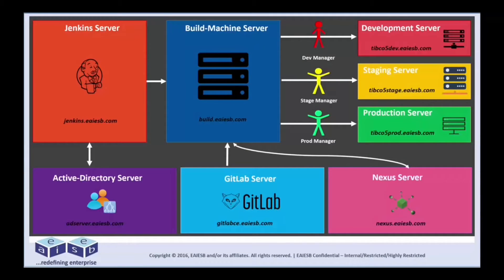The architecture diagram shows the integration of all the components which contribute eventually in building and deploying the code through development, testing, and production, utilizing the respective servers, and maintaining highly secured and logging systems.